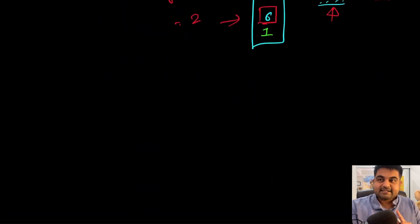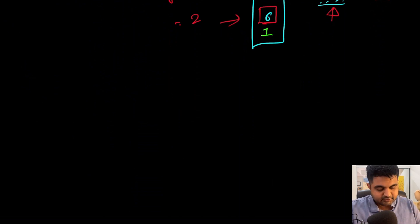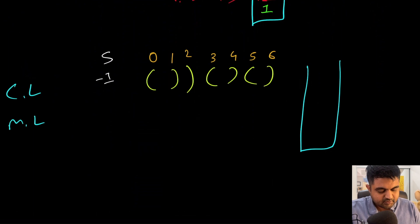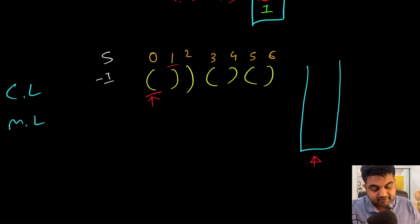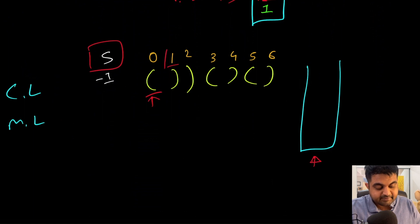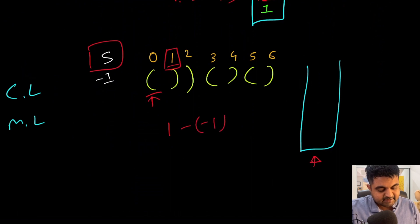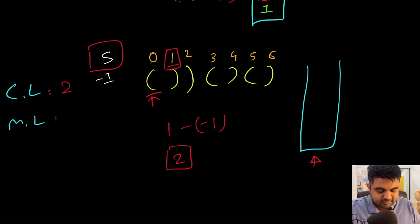Now let me show one more example quickly before moving to the coding solution. This is the optimal solution approach. We identify an opening bracket and mark its value in the stack, then identify a closing bracket and pop that element. After popping, the stack is empty. When the stack is empty, we've found a valid string from the start, so we do: current index one minus starting value minus one, which gives us two. So the current length and maximum length are both two.